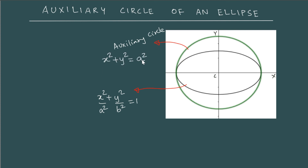The point I want to address here is: suppose you take a point on the x-axis — on the axis of the ellipse — let us say, take a point here, and let us call this point N. If you draw a line perpendicular to the axis passing through N, it is going to cut the ellipse and the circle at two points. Let us say this point on the ellipse is P and this point on the circle is Q.